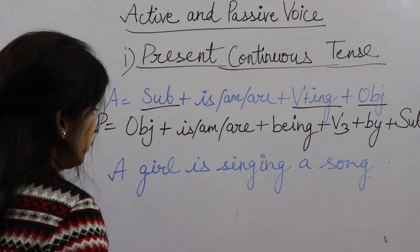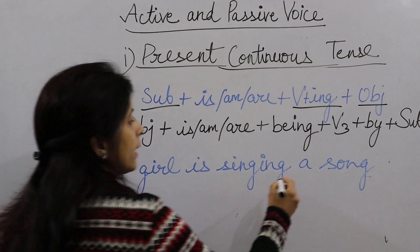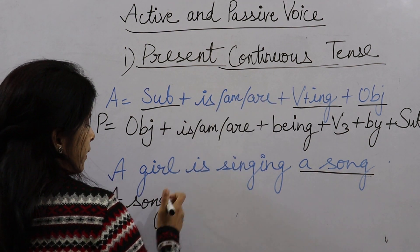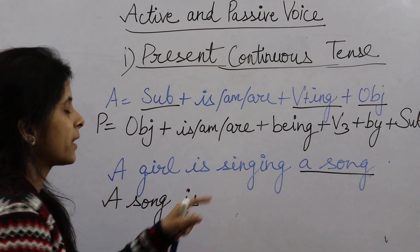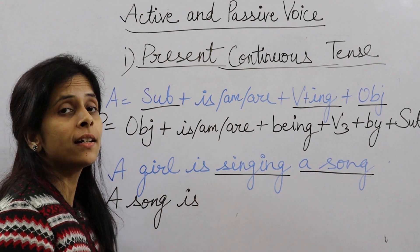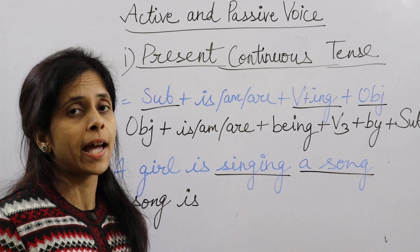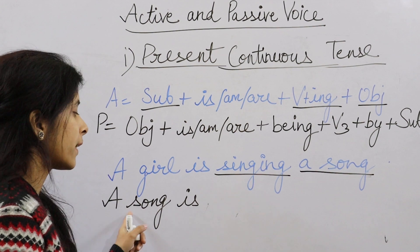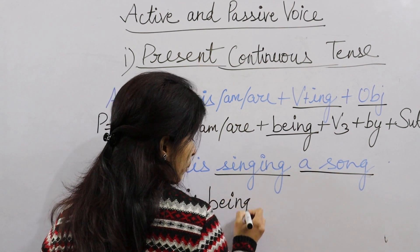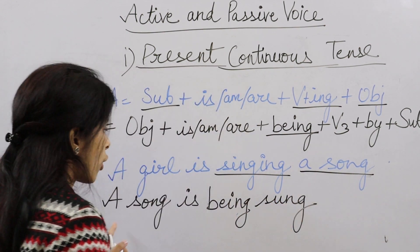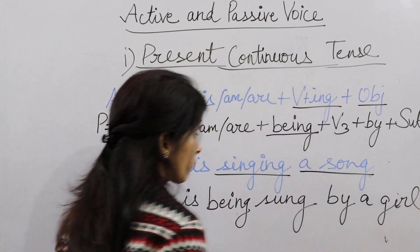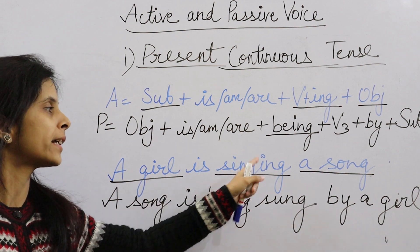एक लड़की गाना गा रही है — इसका Passive Voice बनाते हैं। Object है 'a song', तो सबसे पहले आएगा 'a song'। Is/Am/Are में से 'is' आएगा: a song is. 'Singing' में verb 'sing' की third form है 'sung'। Passive में Is/Am/Are के साथ 'being' भी आता है: a song is being sung. फिर 'by a girl'. तो: A girl is singing a song → Passive: A song is being sung by a girl.